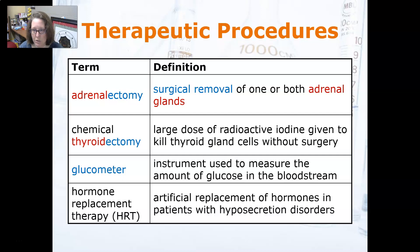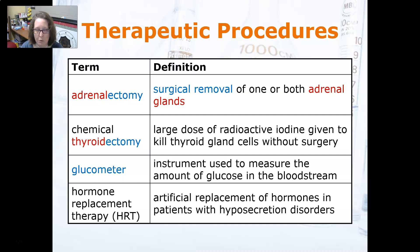Adrenalectomy is the surgical removal of one or both adrenal glands. A chemical thyroidectomy is a large dose of radioactive iodine given to kill the thyroid gland cells without surgery. This would be done in the treatment of hyperthyroidism, where the thyroid gland is producing too much thyroid hormone, such as in the case of Graves' disease.